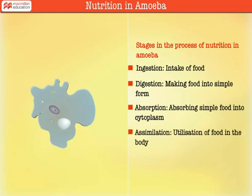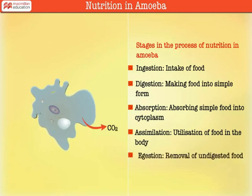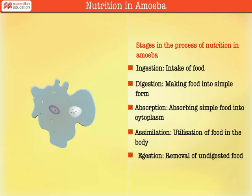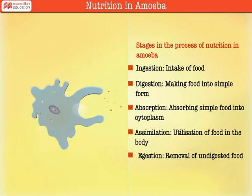Assimilation: Amoeba utilizes the simple molecules formed as a result of digestion for its life activities. Amoeba excretes carbon dioxide and ammonia by diffusion through the general body surface. The waste materials present in the cytoplasm and excess water enter the contractile vacuole. The vacuole swells up with the collection of waste. This moves towards the cell membrane, and the waste is then thrown into the water body by bursting of the vacuole.